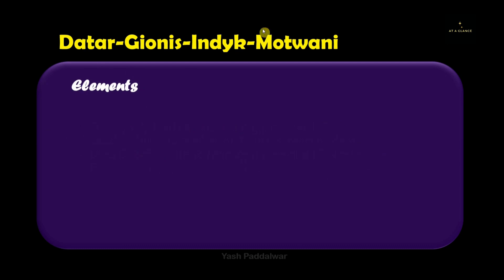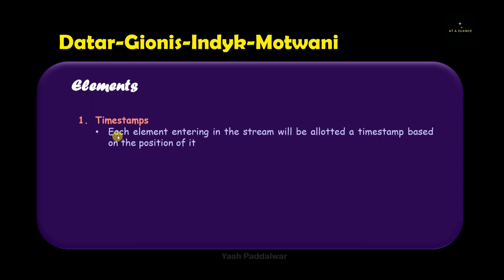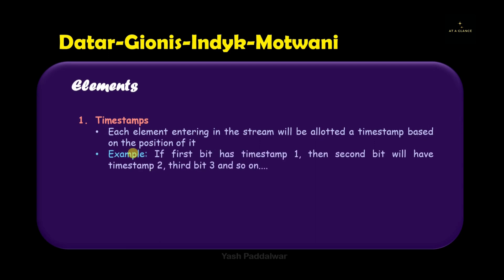To start with the insights of this algorithm, we will first look at the elements associated with it. The first element is timestamp. In a given stream of data, elements continuously enter the window, and each element entering the stream is allotted a specific timestamp based on its position. For example, the timestamp for the first bit is 1, the second bit is 2, the third bit is 3, and so on.